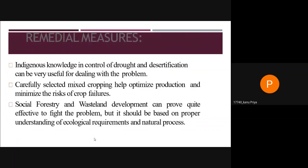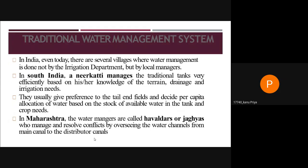Indigenous knowledge in the control of drought and desertification can be useful for dealing with these problems. Carefully selected mixed cropping helps optimize production and minimize the risk of crop failure. Social forestry and wasteland development can be quite effective in fighting against these problems, but should be based on proper understanding of ecological development requirements and natural processes.